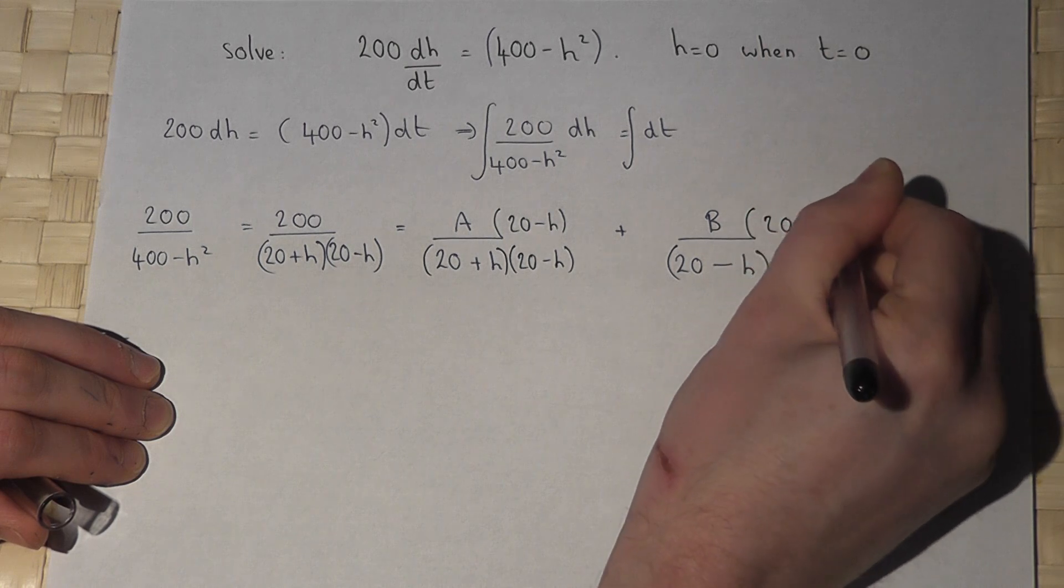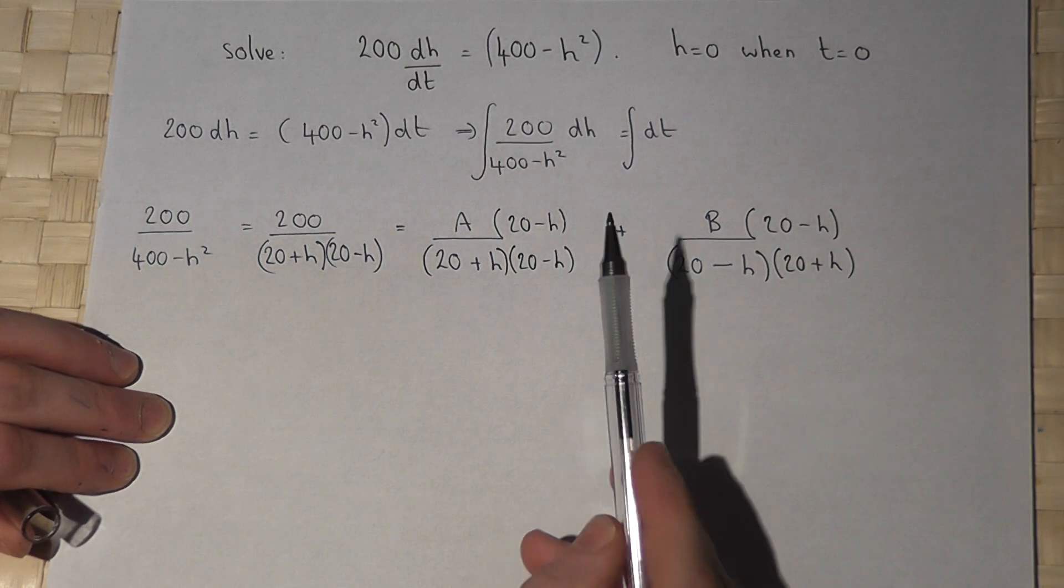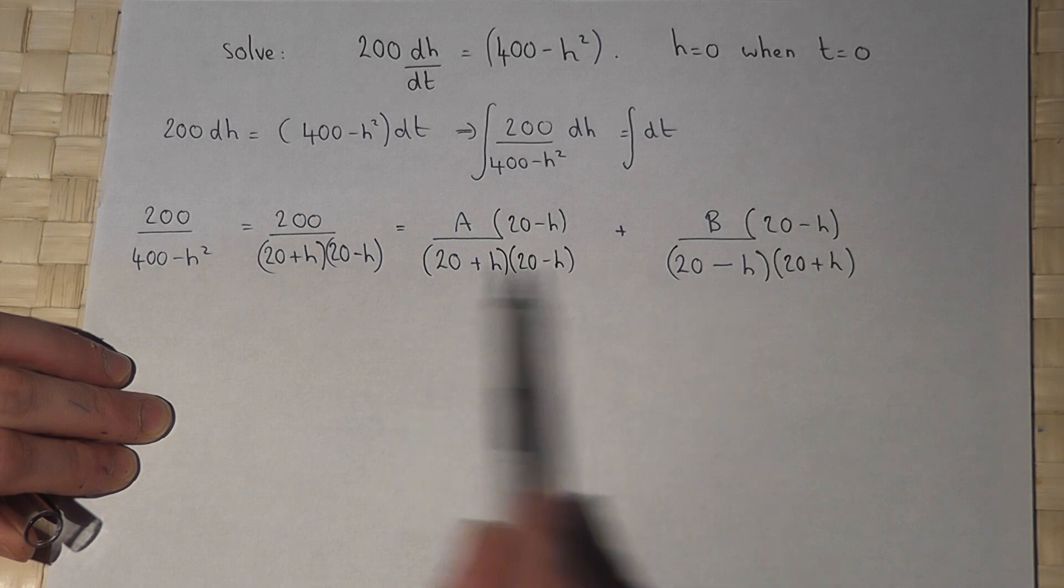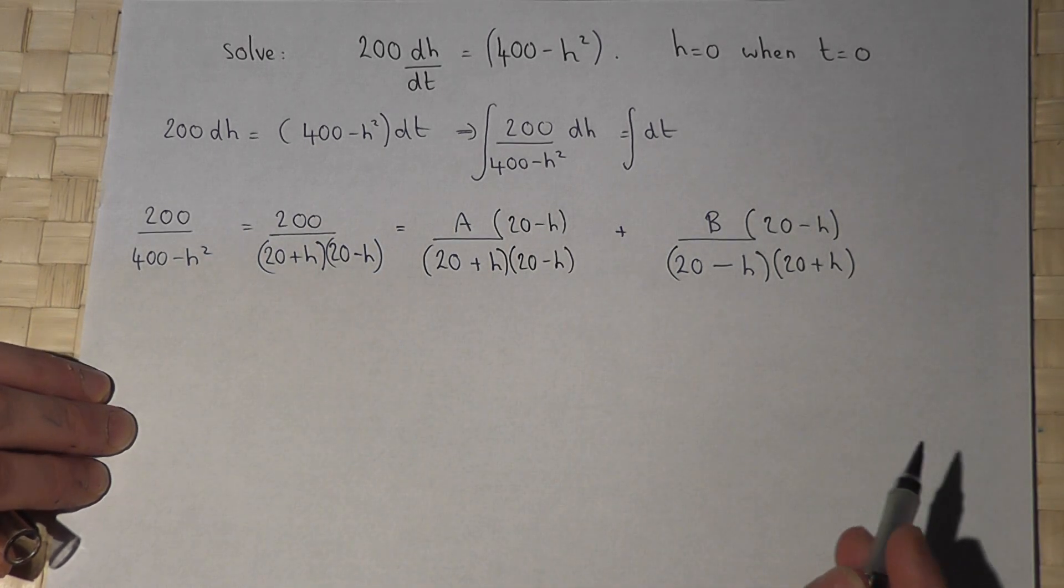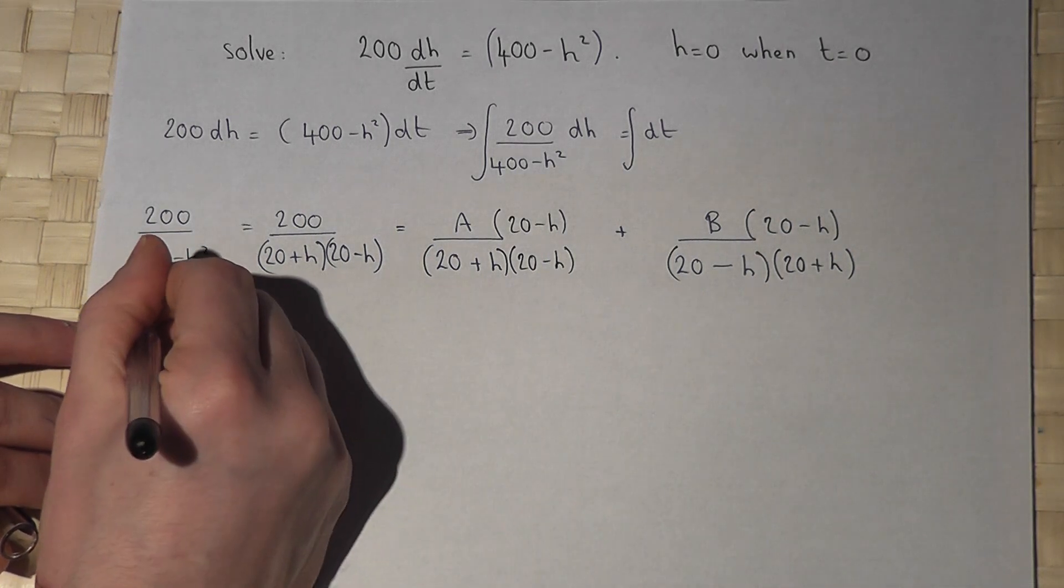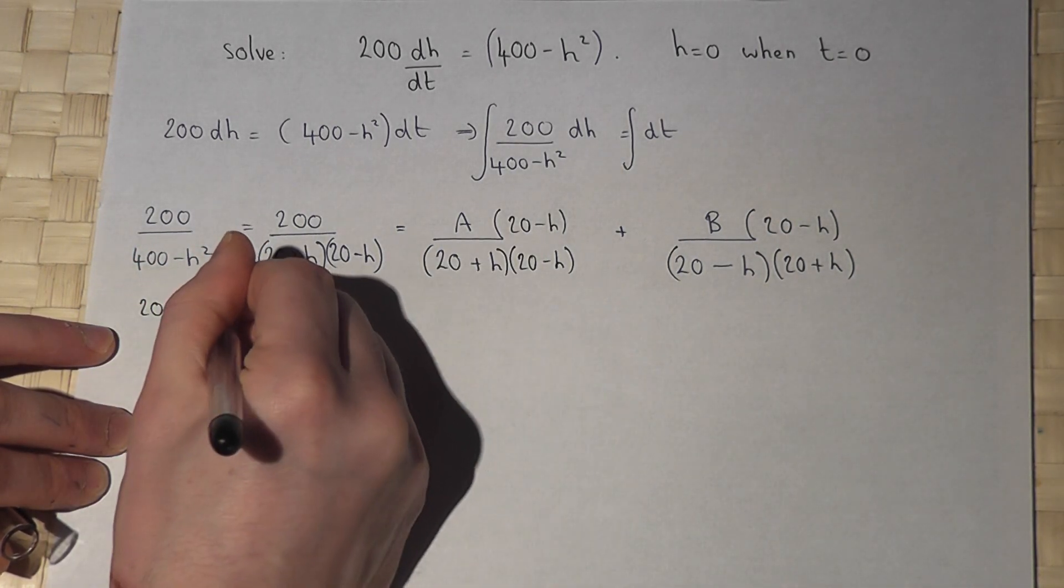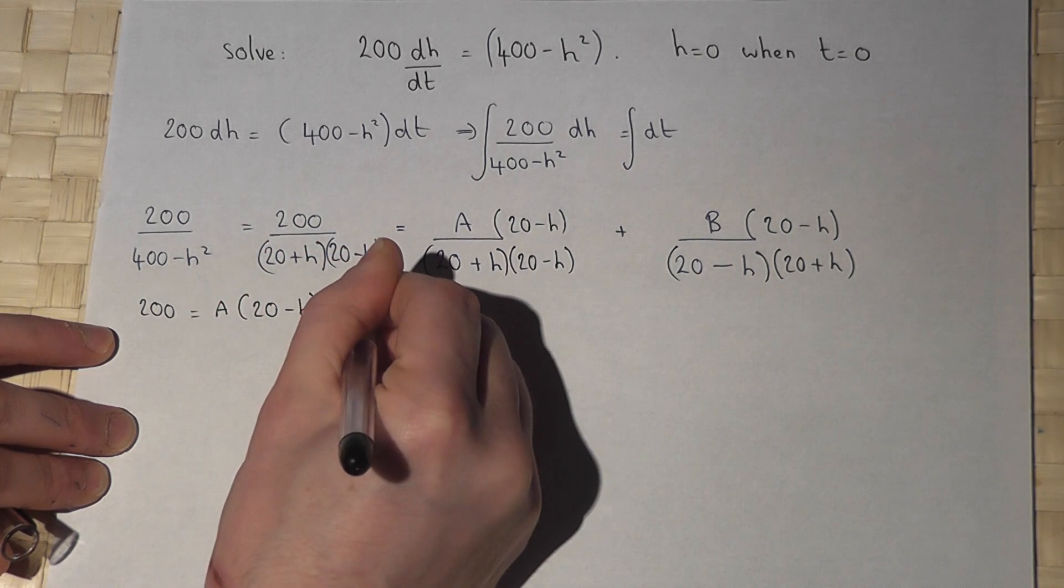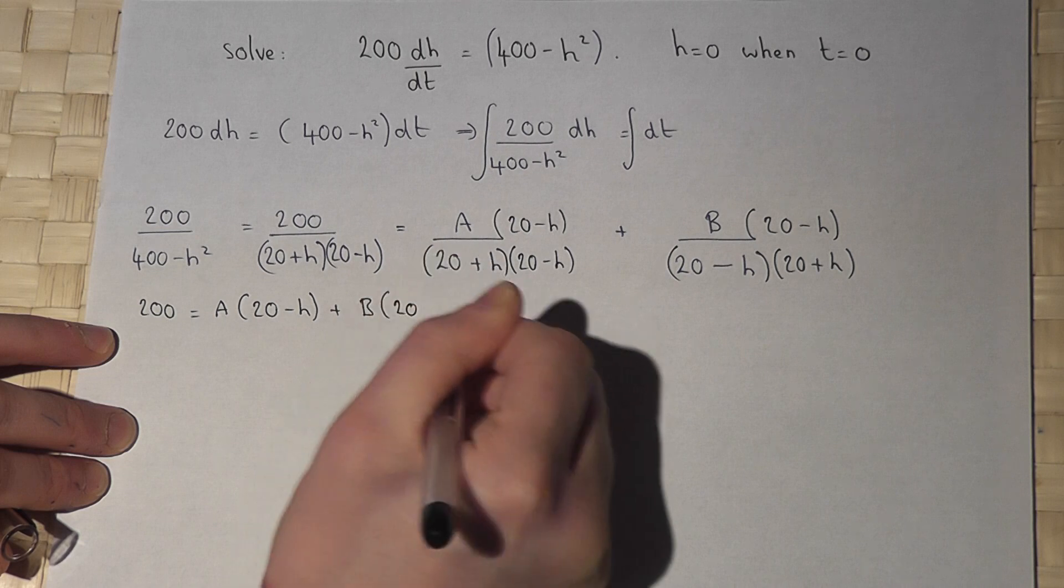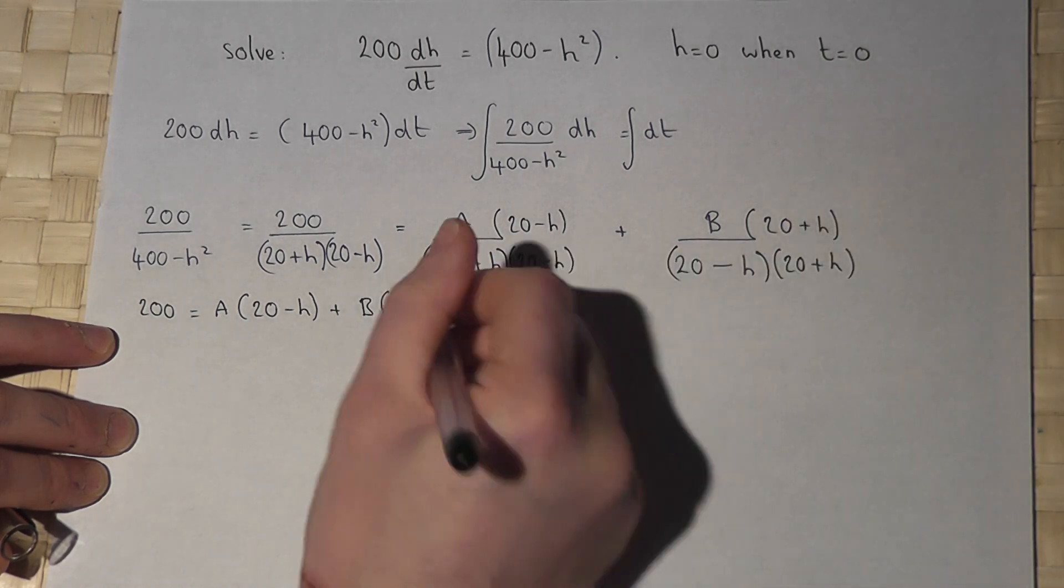I've not actually changed the fractions. Now these three fractions now all share the same denominator. So therefore 200 must equal A times 20 minus h plus B times 20 plus h.